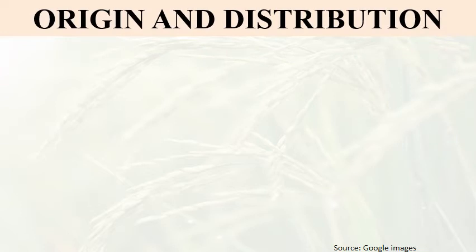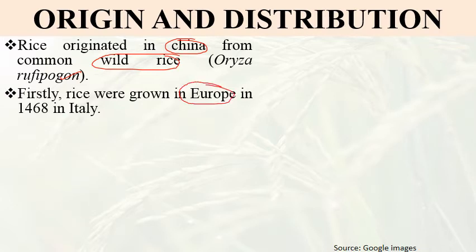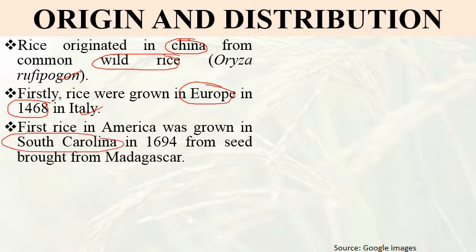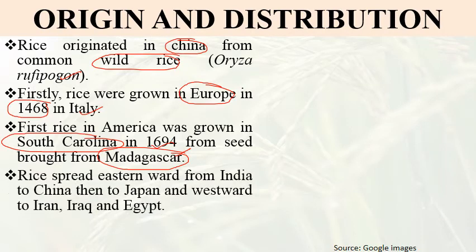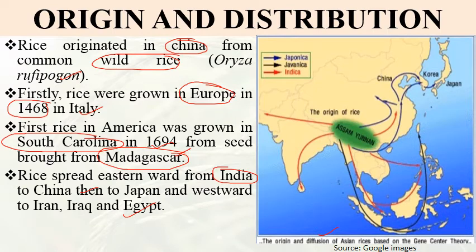Regarding origin and distribution: rice originated in China from a common wild rice, Oryza rufipogon. Firstly, rice was grown in Europe in 1468, specifically in Italy. The first rice in America was grown in South Carolina in 1694, from seeds brought from Madagascar. Rice then spread through the eastern world from India to China, then to Japan, and through the western world to Iran, Iraq, and Egypt. This map shows the origin of rice based on gene center theory.